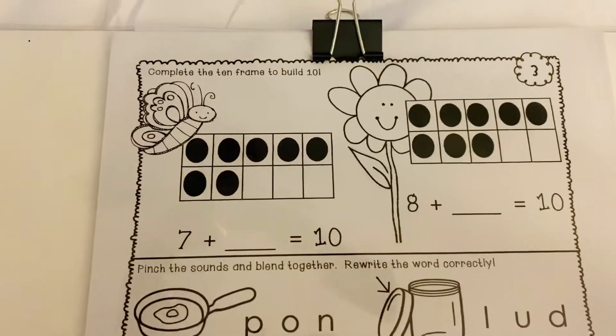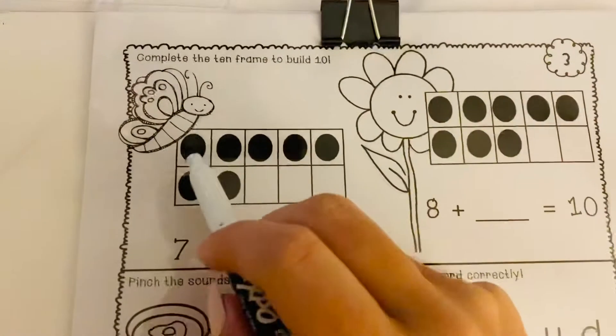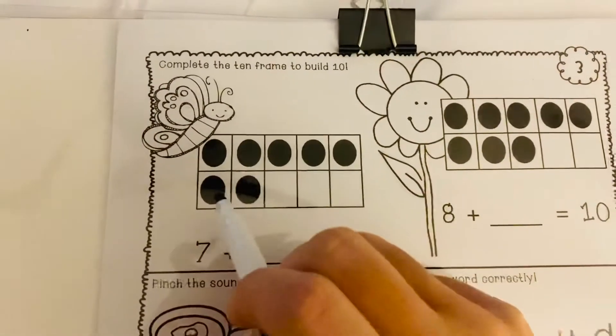So it says complete the 10 frame to build 10. So that's what we're doing at the top. So we have 1, 2, 3, 4, 5, 6, 7.